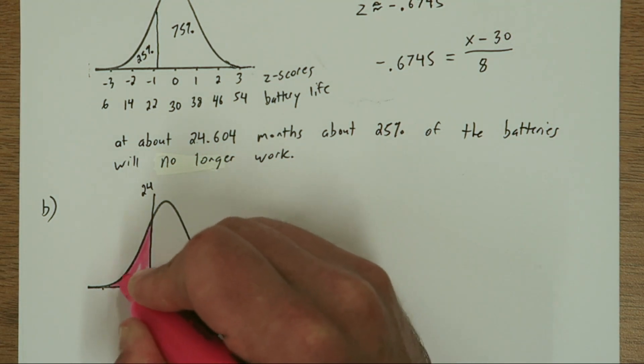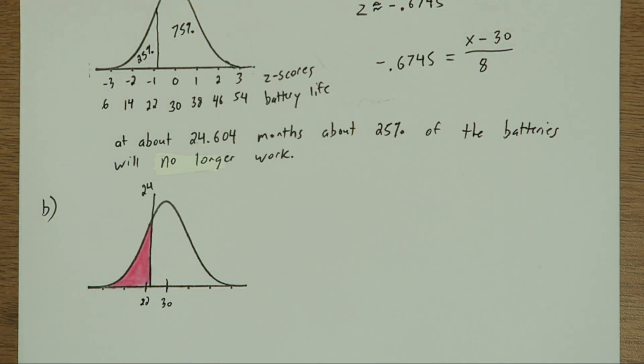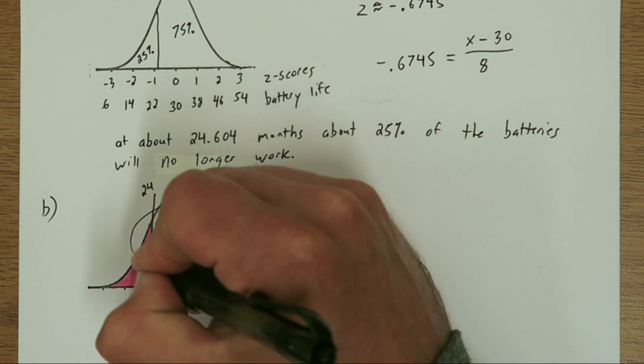So the probability a customer's battery lasts less than 24 months corresponds to this pink probability we just shaded in.